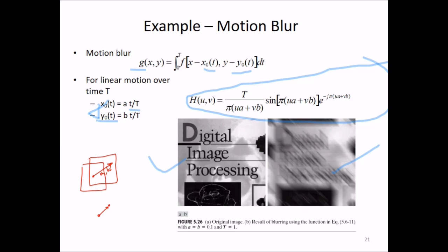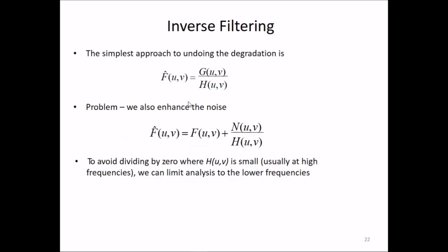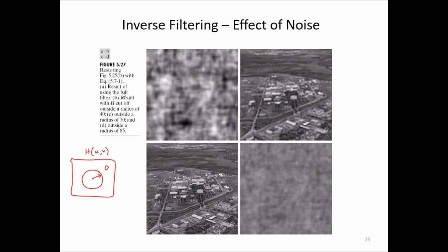Coming to inverse filtering — the simplest approach to undoing degradation is to compute F-cap(u,v) = G(u,v) / H(u,v). The problem is that this also enhances the noise by adding N(u,v) / H(u,v). To avoid dividing by zero when H(u,v) is small (usually at high frequencies), we can limit the analysis to lower frequencies. Results of inverse filtering are shown: using the full filter, and cutting off outside radii of 40, 70, and 85.